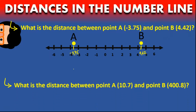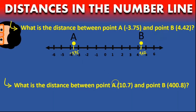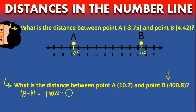Let's try a new problem. Let's say we have point A at 10.7 and point B at 400.8. Point B is complicated to put on the number line because it's a very big number, so we can just apply the formula. B minus A is going to be 400.8 minus 10.7. The absolute value of that is 390.1. So the distance between these two points is 390.1.